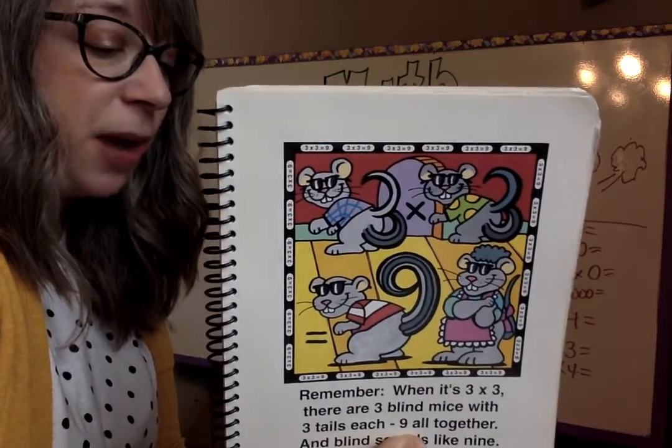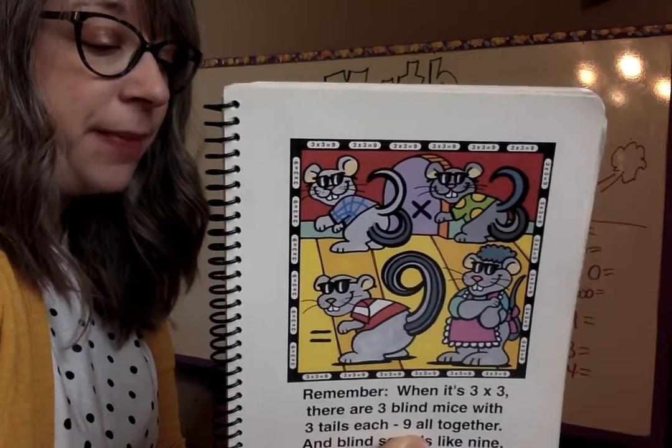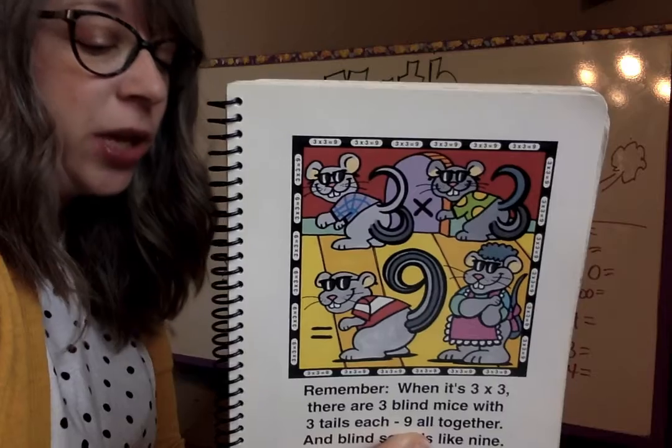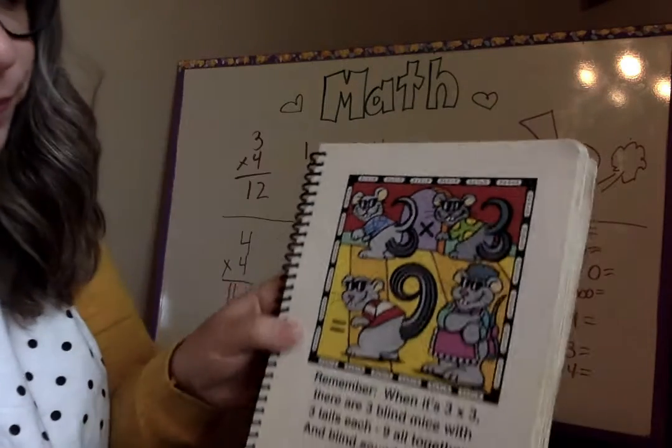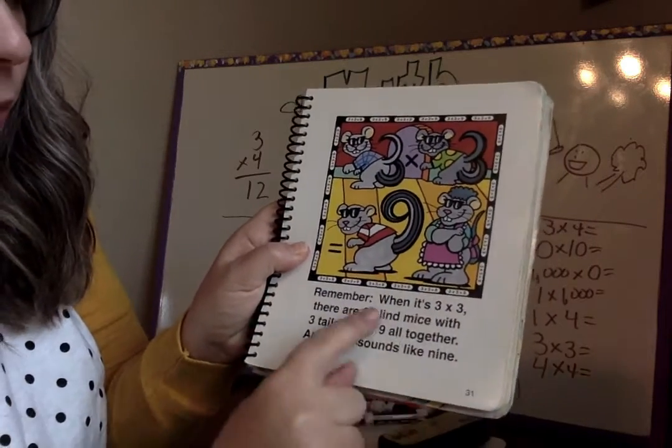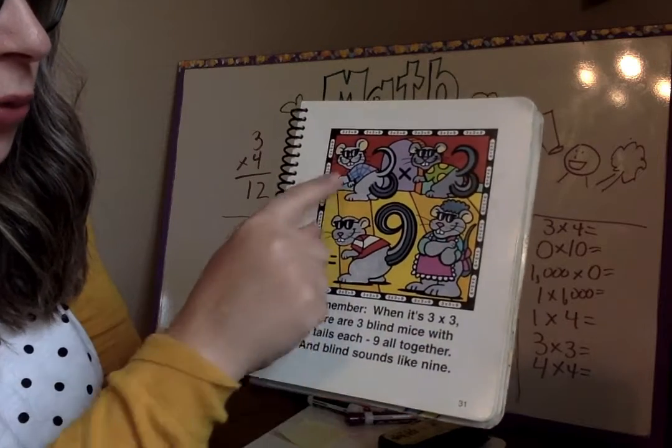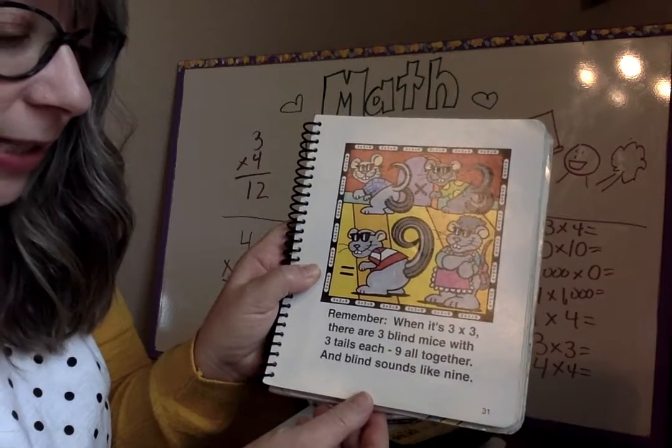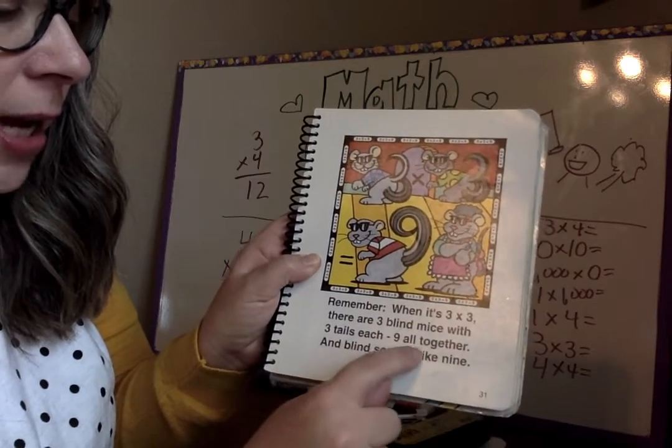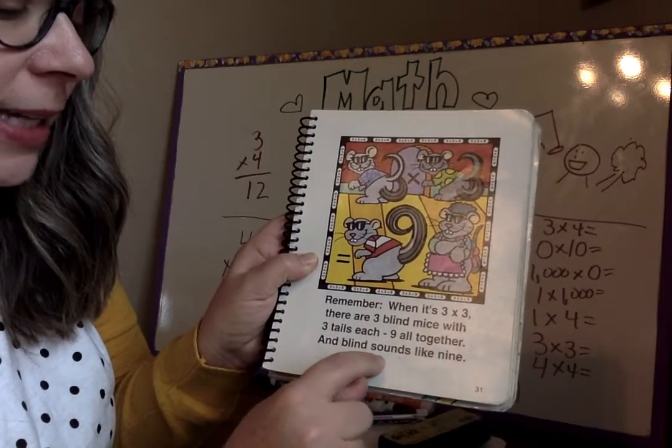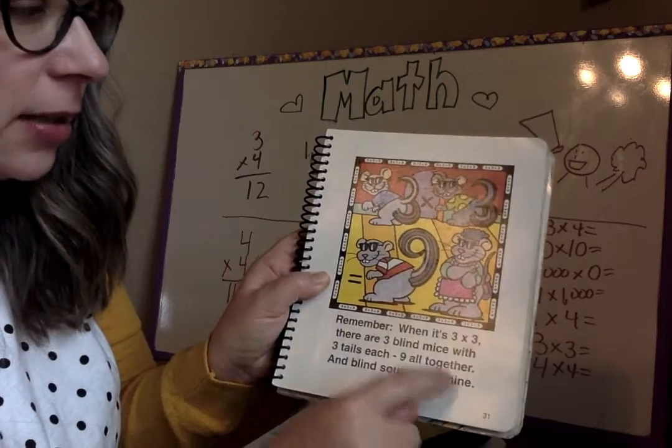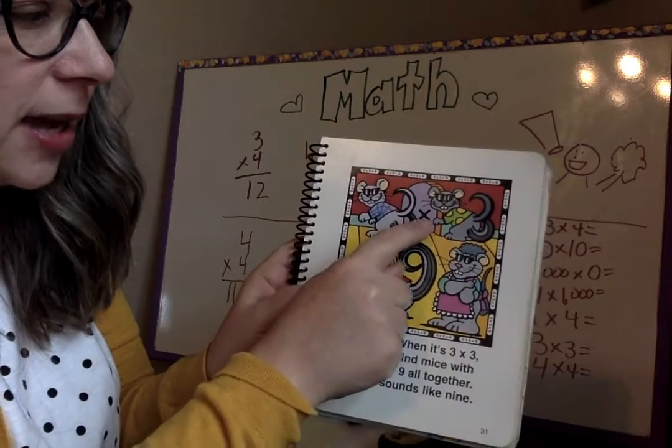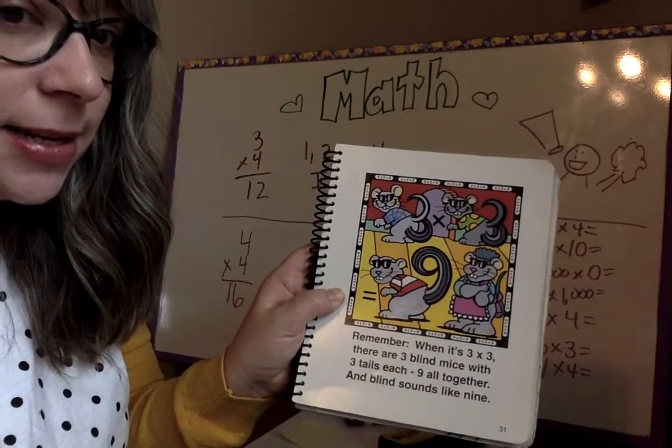The mama mouse hoped and hoped that her babies would each have a tail. The birthday came and to mama's delight, each baby had not one tail, but three tails each. The mama mouse was so proud. Remember when it's three times three, there are three blind mice with three tails each. Nine all together and blind sounds like nine. So three blind, nine mouse. Three times three is nine.